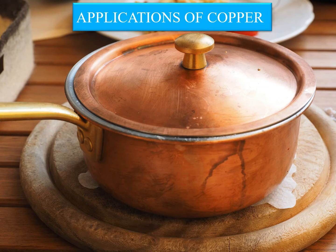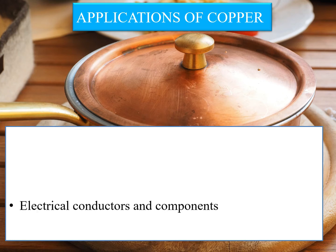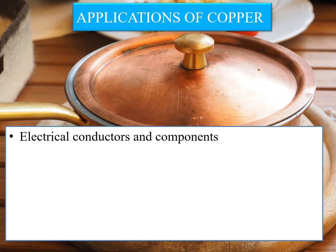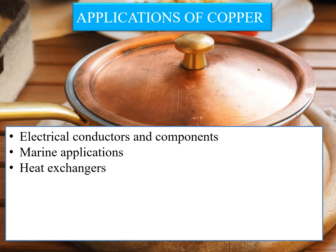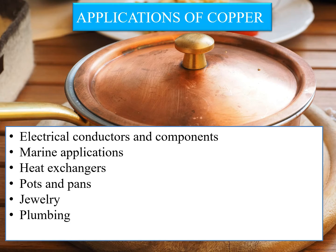Copper is the most important non-ferrous metal and can be used in both alloyed and unalloyed states. The most useful properties of pure copper include excellent electrical conductivity, which is second only to silver. Copper wire and other electrical applications account for 60 percent of all copper produced. Copper is also used in marine applications, in heat exchangers due to its high thermal conductivity, in pots and pans, in jewelry making, for plumbing purposes, and for the production of springs.